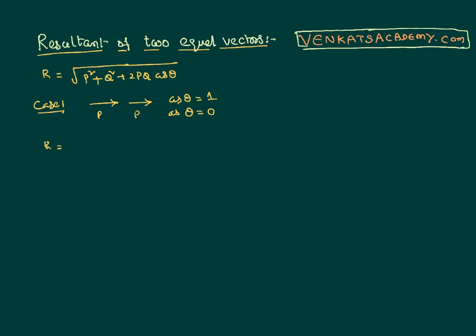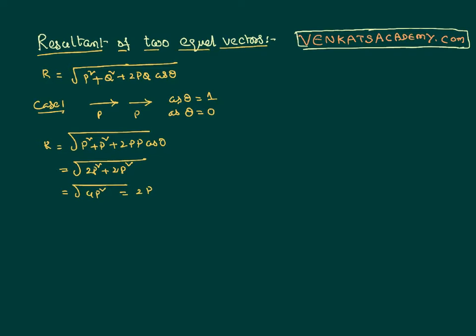Then I can find the resultant as the square root of p squared plus p squared plus 2p·p·cos 0. Cos 0 is 1, so the expression becomes the square root of 2p squared plus 2p squared, which is the square root of 4p squared — that is 2p. The direction of this resultant vector will also be in the same direction as the given vectors.